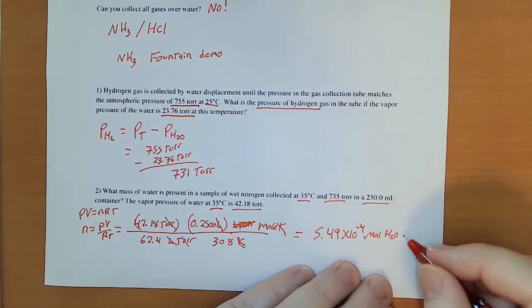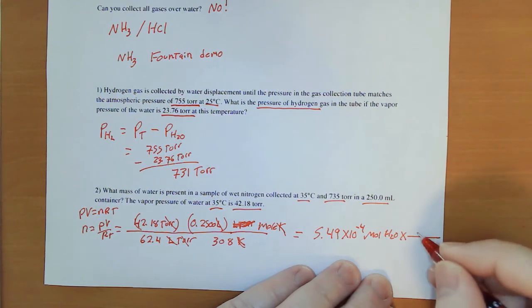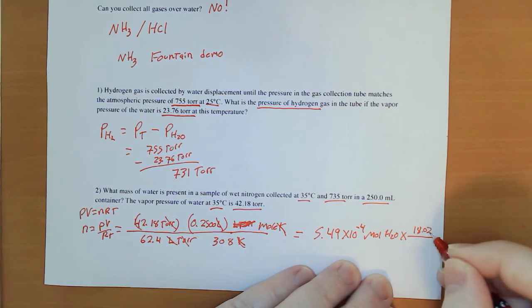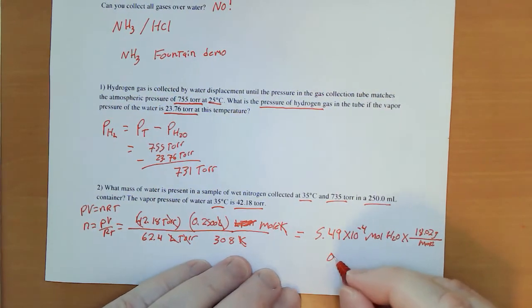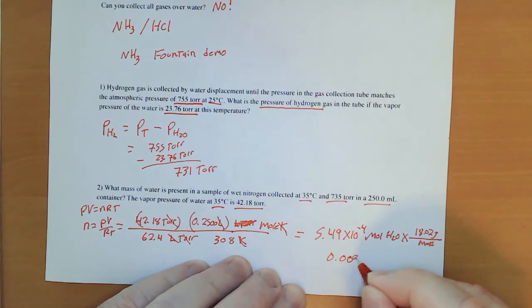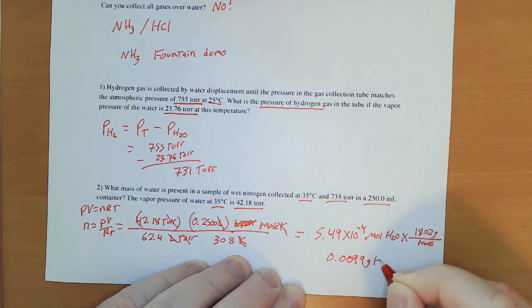AP exam actually asked people to do that one year. So multiply that by the molar mass of the water, 18.02 grams per mole, and we got 0.0099 grams of water.